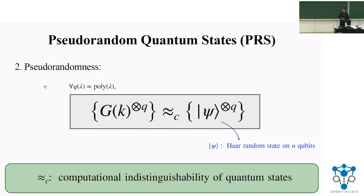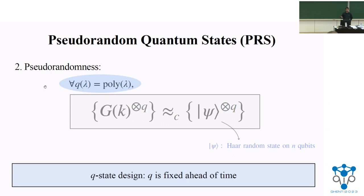We should allow for any arbitrary polynomial number of copies. It's important that this is parameterized for all polynomials in the security parameter, because if you fix the number of copies the adversary can get ahead of time, it results in a slightly incomparable notion called a state design that you might already be familiar with.